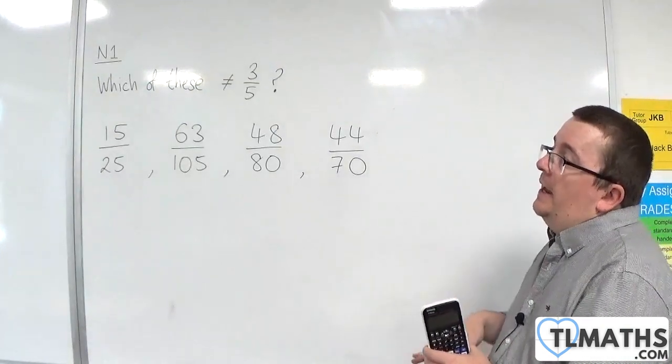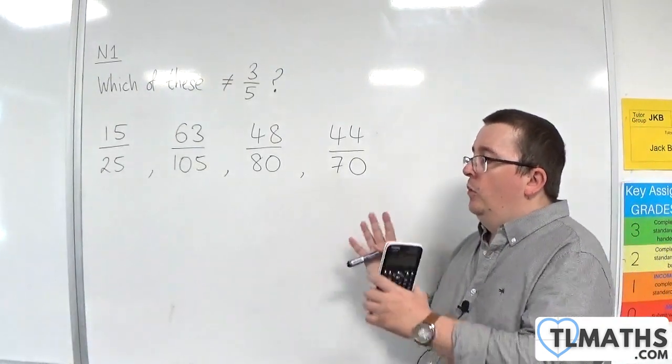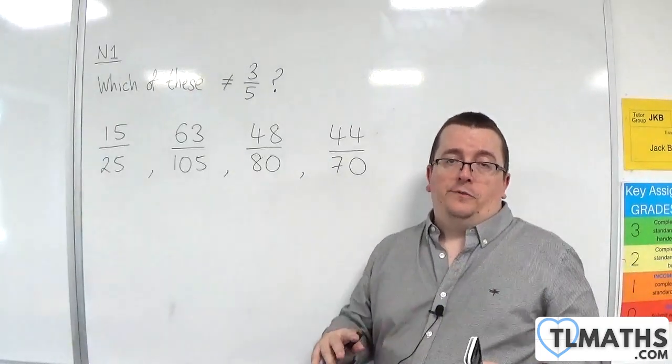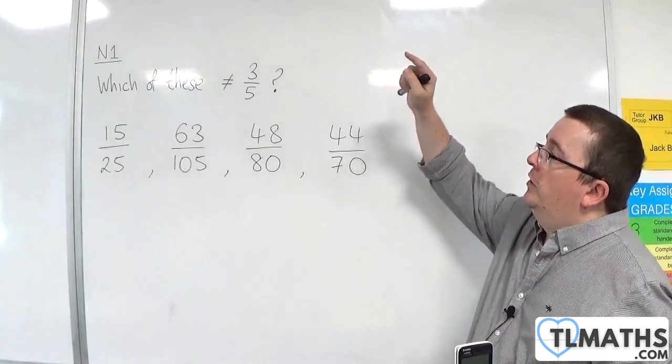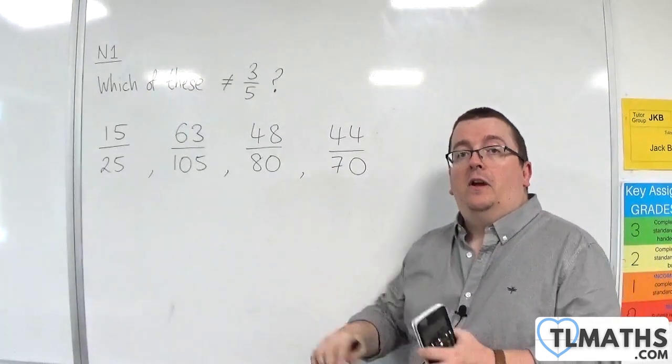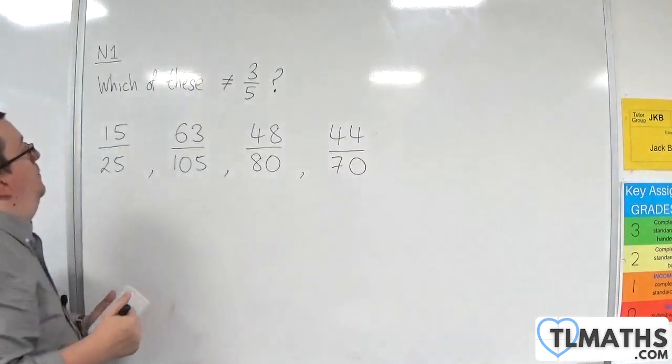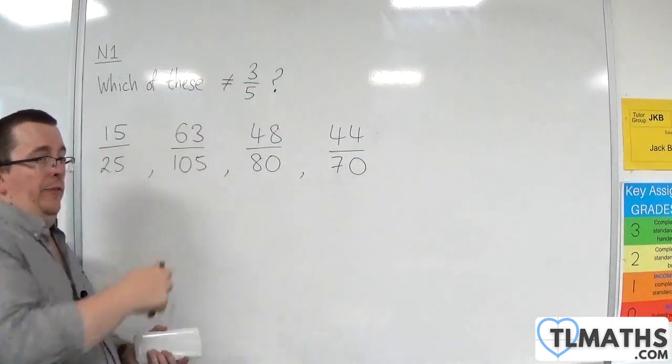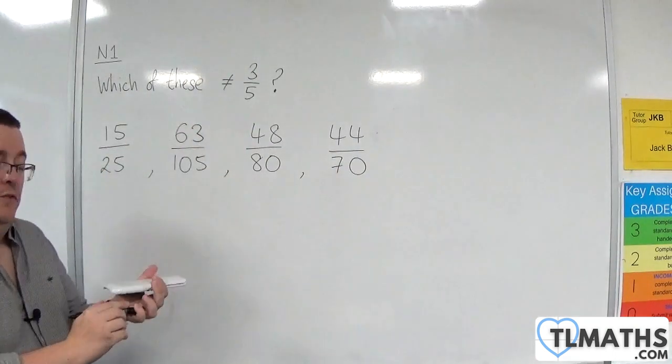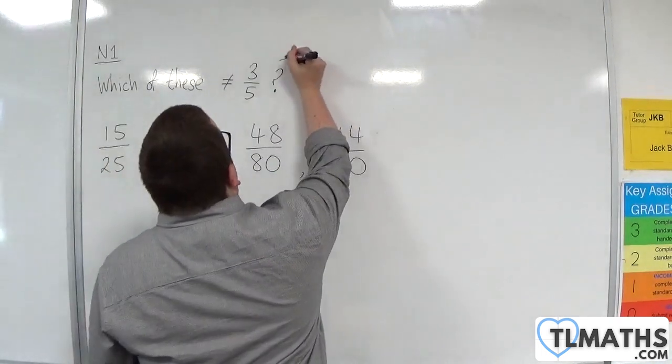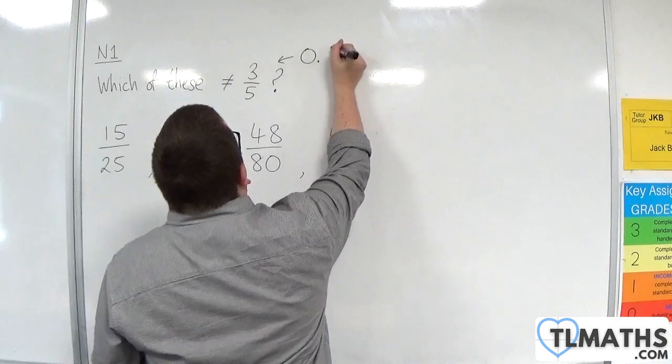What I'll do instead is I will skip over that and assume that I can't do that. And I will convert each of them into decimals. And then we will see. So three-fifths, let's first of all convert that into a decimal. And that's 0.6. So 0.6 is the target.